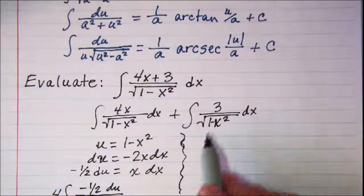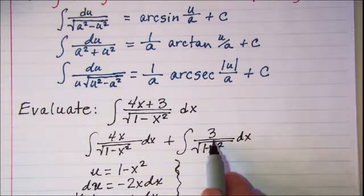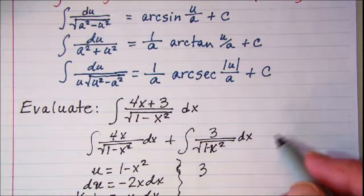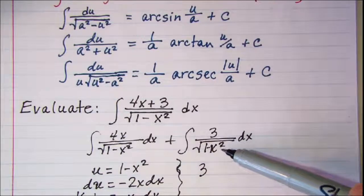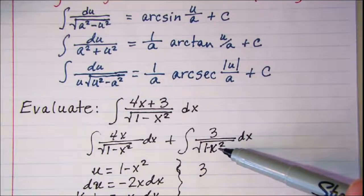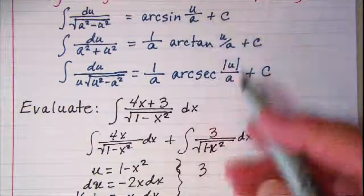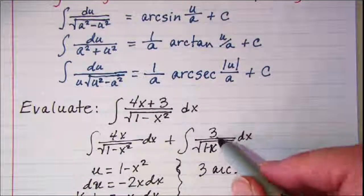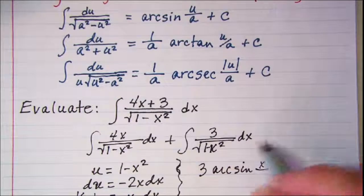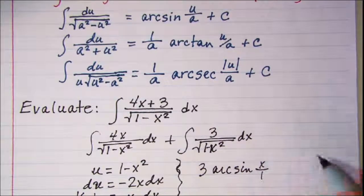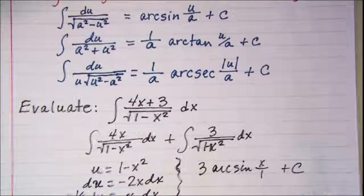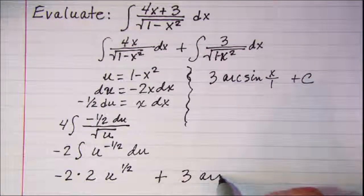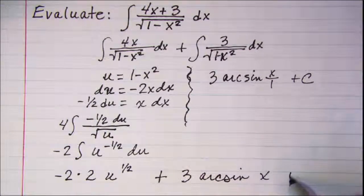Now for this second part, the integral of this 3 can be brought out in front, and then u is just x, so this will be arc sine, and then x over 1 is my a value plus a constant. So I'm going to write that. So this is 3 arc sine x plus a constant.